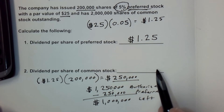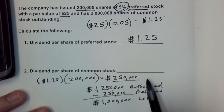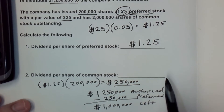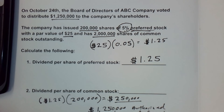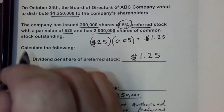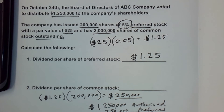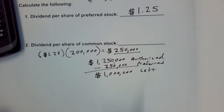Next, I need to find how much per share goes to common stock, so I look at how many shares of common stock are outstanding. In this case, we have 2 million shares of common stock outstanding. Always look for shares outstanding — your problem might give you shares issued or shares authorized, but only outstanding shares are paid dividends.